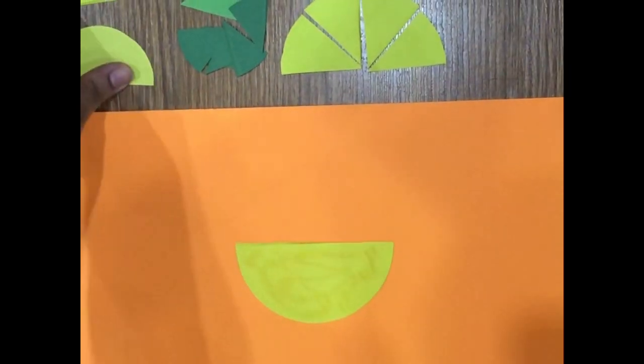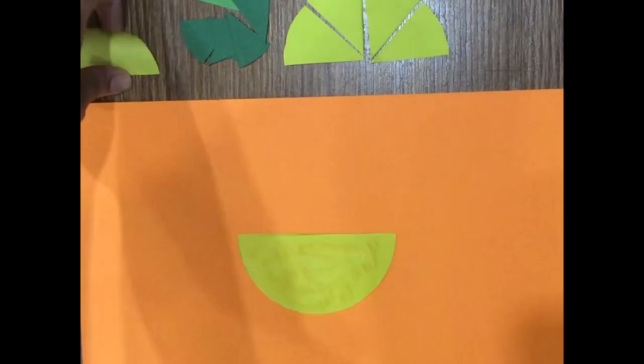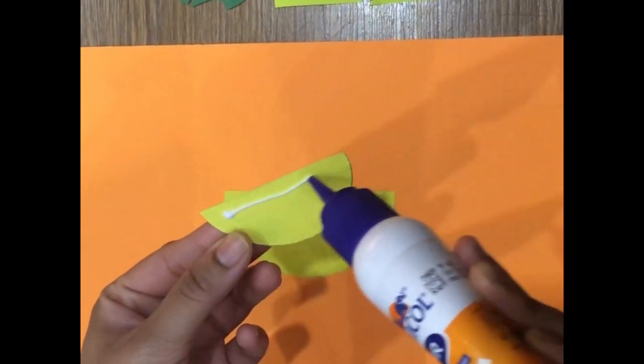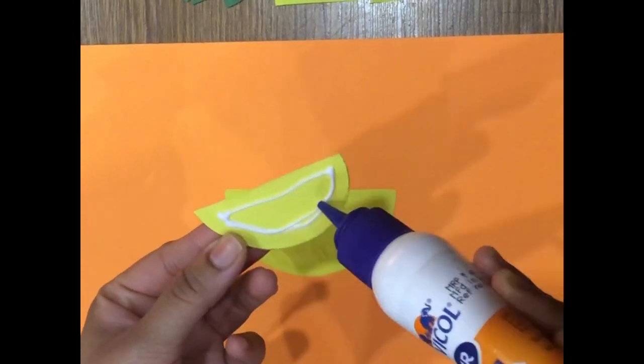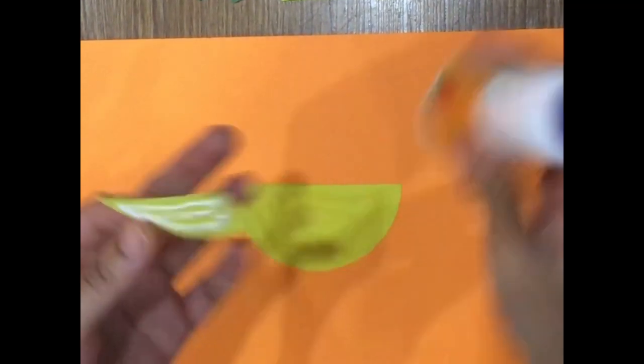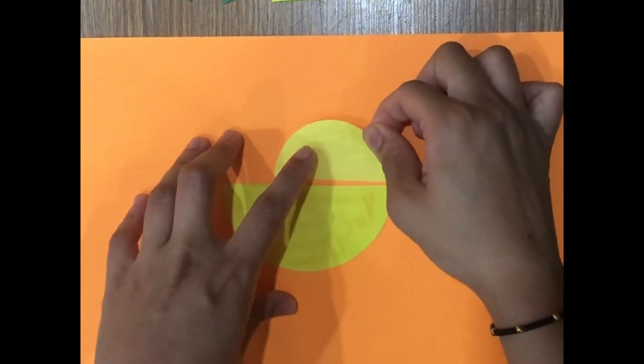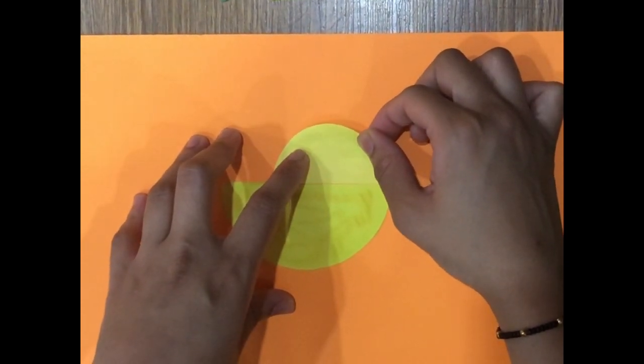Take any other small semicircle. Make sure this should be smaller than the size of the circle you already used to cut the body of the bird. Paste it at one of the corners of the bigger semicircle. This will be the head of the bird.